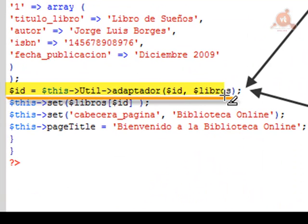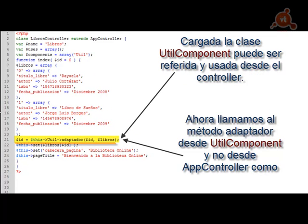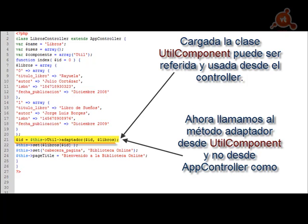In the controller code, we now call the adaptador method from $this->Util (the component), instead of calling it via $this->adaptador() as we did when it was in AppController. Everything else in the controller remains unchanged and works exactly as before. The only difference is that now we have more reusable code that can be used from any controller, and also from any other CakePHP application when needed — simply by copying the component into the app/controllers/components folder and defining it in the 'components' attribute array.